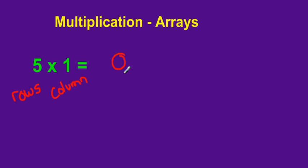So 1, 2, 3, 4, 5 rows. And we already have 1 column there. So there's our array. Now if we were to add these up,